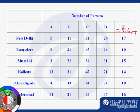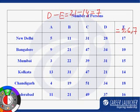When we subtract E from D for Kolkata, we get 21 minus 14, which is equal to 7. This is nothing but the aggregate number of persons in Kolkata having exactly 3 cars and 4 cars. Let us denote this by a variable F.